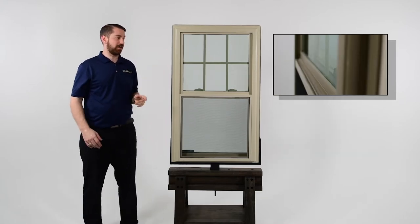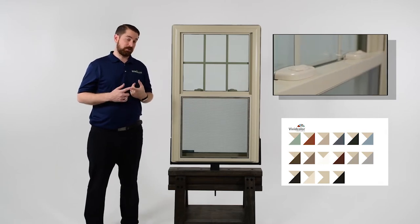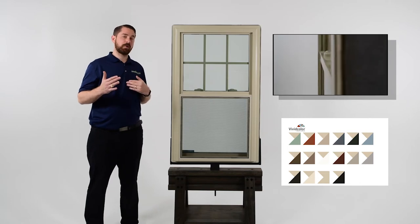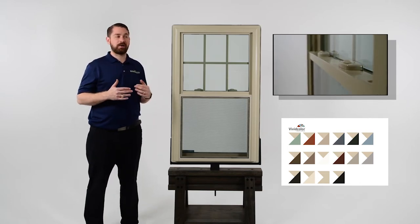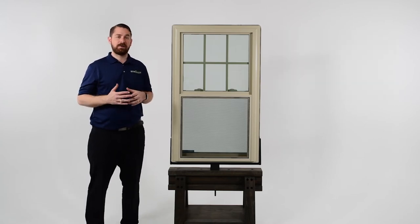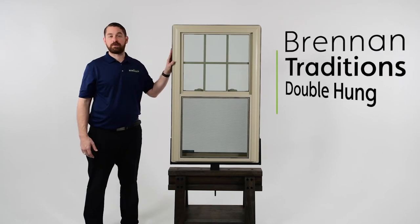They do also have an optional upgrade option for exterior colors. So if you want to go with a two-tone window, a tan exterior with a white interior, or a black exterior and a tan interior, that is an option that's available on the Traditions window.